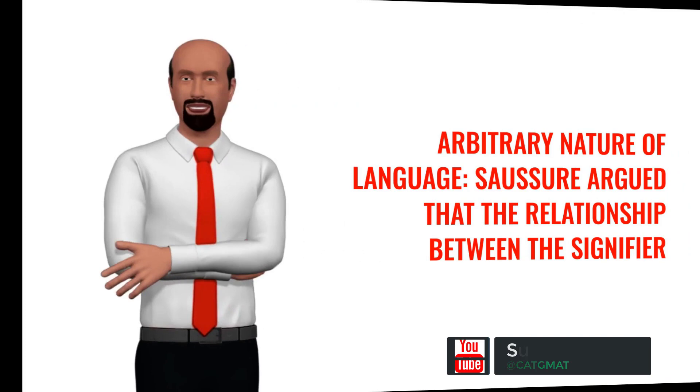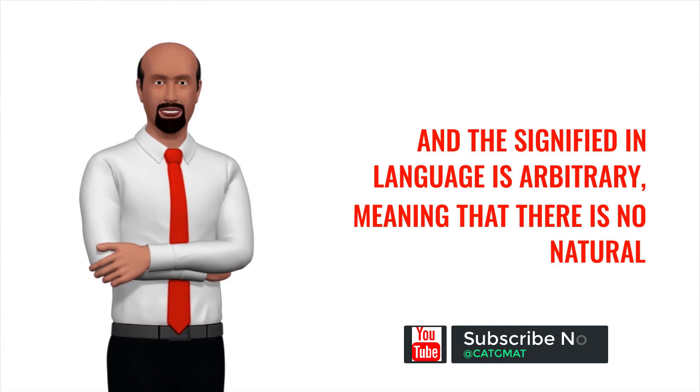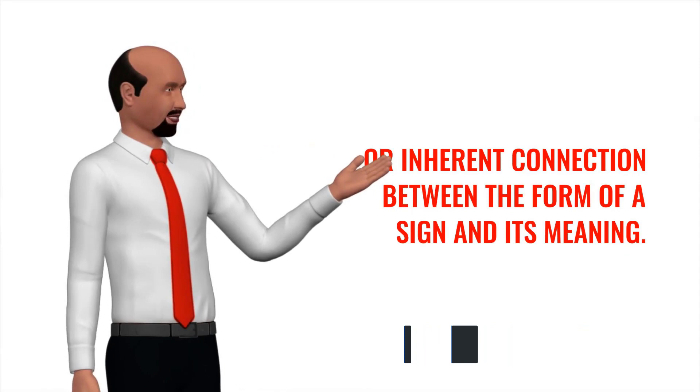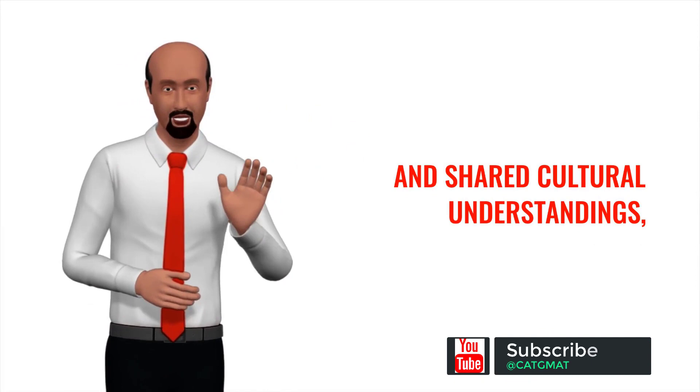Arbitrary nature of language: Saussure argued that the relationship between the signifier and the signified in language is arbitrary, meaning that there is no natural or inherent connection between the form of a sign and its meaning. The meanings of words are determined by social conventions and shared cultural understandings, rather than by any inherent properties of the sounds or symbols used in the language.